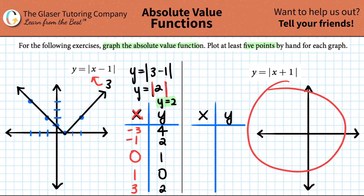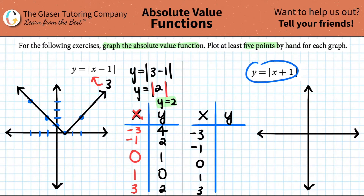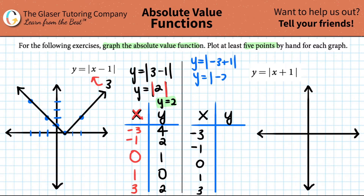Next one — this will go quicker. We already know our x values: negative three, negative one, zero, one, and three. This is basically the same function, but it's plus one instead of minus one. So y equals the absolute value of negative three plus one — y equals the absolute value of negative two. Negative three plus one is negative two.